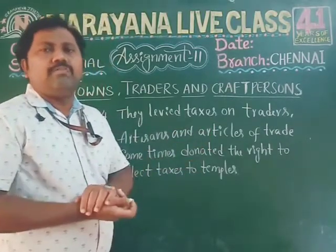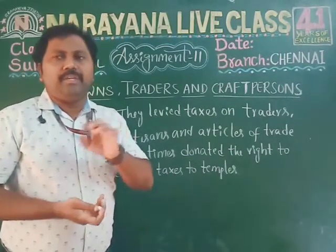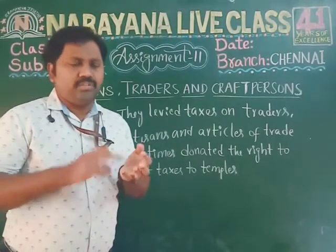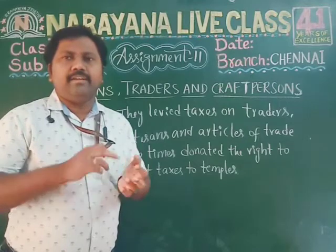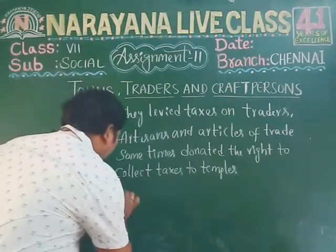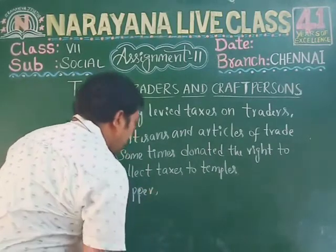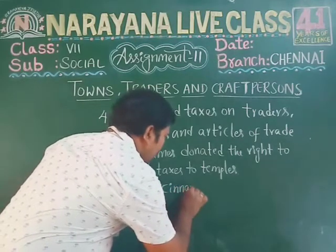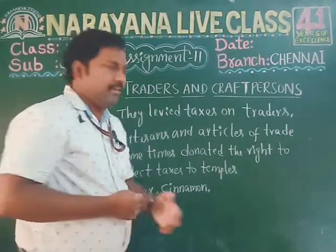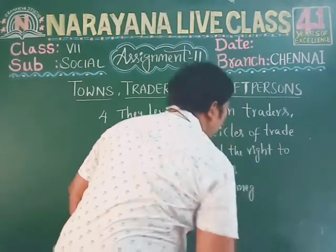Fifth question: name the spices which became a part of European cooking. The answer is pepper, cinnamon, nutmeg, dried ginger, etc.